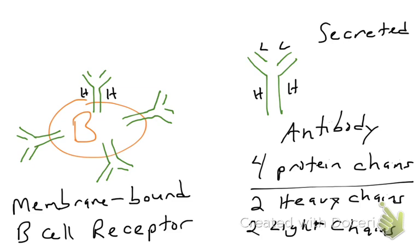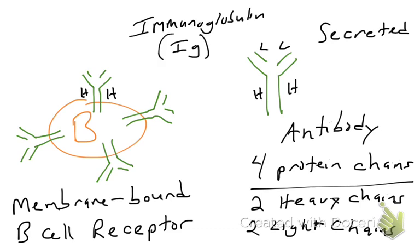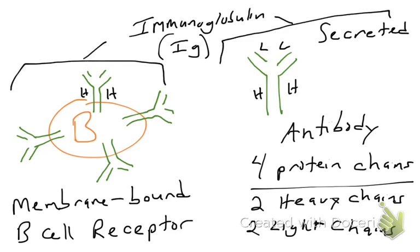A receptor protein is something found on the surface of a cell embedded in the plasma membrane that would bind a ligand — something on the outside of the cell. So antibodies can exist either free-floating, soluble, and secreted in your humors, or they're inserted into the plasma membrane of a B cell. When they are in the membrane of a B cell, we don't call them antibodies — we call them either a B cell receptor or an immunoglobulin. These three terms — antibody, immunoglobulin, and B cell receptor — can be used somewhat interchangeably.